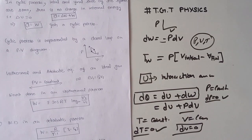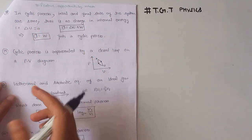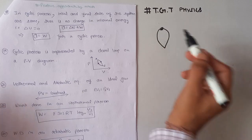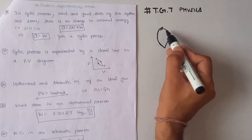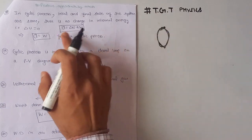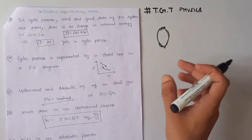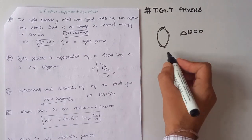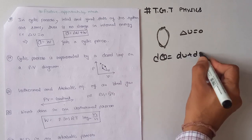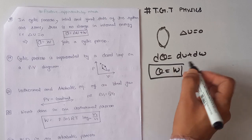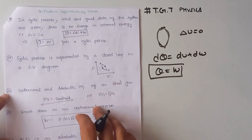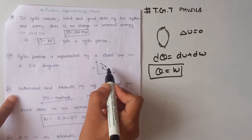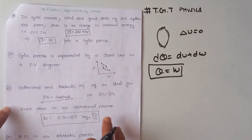Our next important key point is the cyclic process. In a cyclic process, the initial and final states of the system remain the same. Since the first and last points are the same, there is no change in internal energy, so dU = 0. According to the first law of thermodynamics, dQ = dU + dW, so for a cyclic process Q = W. A cyclic process is represented by a closed loop on a PV diagram.